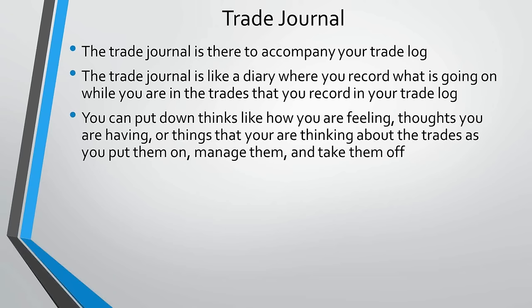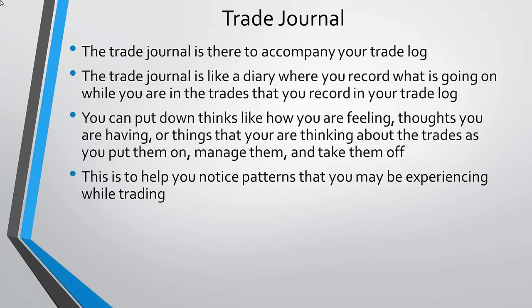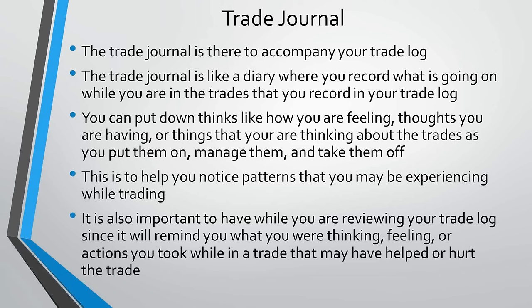The trade journal is there to accompany your trade log. They are separate documents but they work together. The trade journal is like a diary where you record what's going on while you're in the trades you record into your trade log — how are you feeling, thoughts you're having, things you're thinking about as you put trades on, manage them, and take them off. This is to help you notice patterns you may be experiencing while trading. The only good time to decide what's going to happen to a trade is prior to getting in it. You can't make good decisions while you're in a trade — it's too emotional. You can go broke taking profits too early if you don't have a 100% correct system, so you plan these things ahead of time.